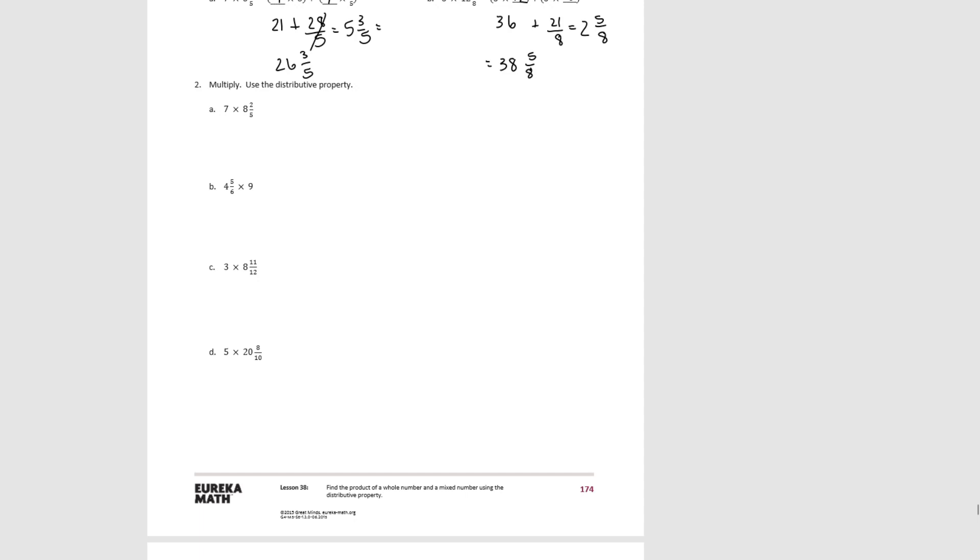For number 2, you're going to do the same thing, but you're writing all of it yourself. For A, we're going to do 7 times 8 for the whole number part and 7 times 2 fifths for the fractional part. So then we get 56 plus 14 fifths. 14 fifths would decompose into 2 and 4 fifths. Then when we add together, we get 58 and 4 fifths.